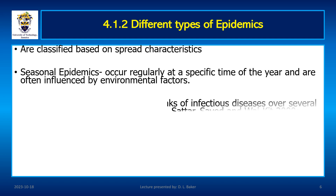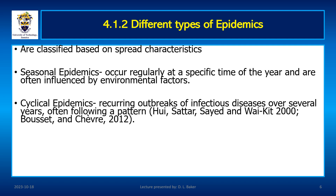There are also cyclical epidemics. Some epidemics tend to occur in cycles that may repeat over days, weeks, months, or years. An example is the measles virus, which tends to occur in cycles of two to three years. Hepatitis A in a Native American city occurs every five to seven years.